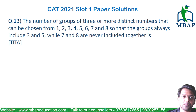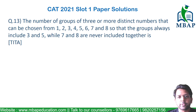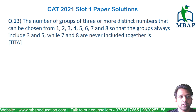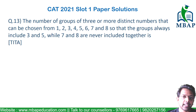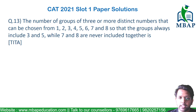Let's have a look at the next question. The number of groups of three or more distinct members that can be chosen out of 1, 2, 3, 4, 5, 6, 7, 8, so that the group always includes 3 and 5, while 7 and 8 are never included together. So on one side I have one constraint: I want 3 and 5 to be included, and on the second side, I don't want 7 and 8 to be a part of it.